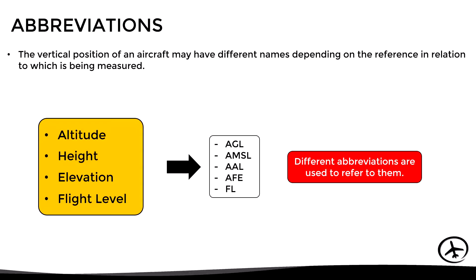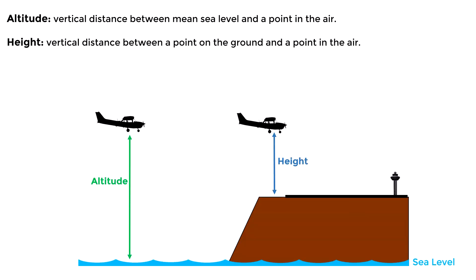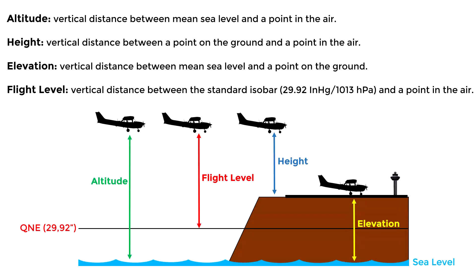Before getting into detail with these abbreviations, let's remember some basic concepts. Altitude is the vertical distance between the mean sea level and a point in the air. Height is the vertical distance between a point on the ground and a point in the air. Elevation is the vertical distance between the mean sea level and a point on the ground. Finally, the flight level is the vertical distance between the standard pressure level of 29.92 inches of mercury or 1013 hectopascals and a point in the air.